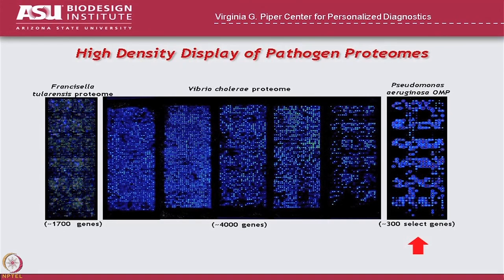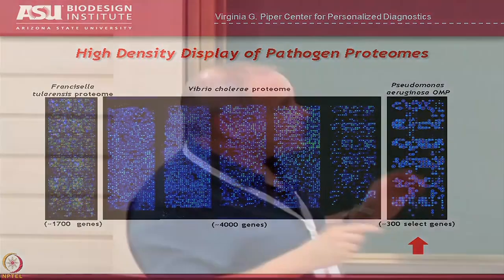Let me give you one example — we'll talk about more as the course goes on. This is pathogen proteins. I mentioned Tularemia — that is the entire proteome of Francisella tularensis, in fact the entire proteome in duplicate, and we got them all onto a single array. These five chips are for Vibrio cholerae (cholera), and then this chip here is just outer membrane proteins from an organism called Pseudomonas aeruginosa, which is the organism that causes pseudomonal pneumonias and is a leading cause of death in patients with cystic fibrosis.